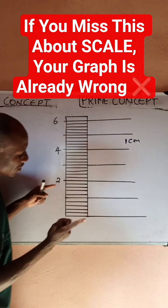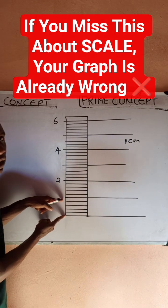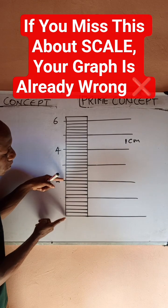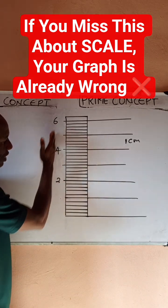Because I'm giving an interval of two boxes, and since one box is 1 cm, then two boxes should be how many cm? You are very correct - 2 cm.